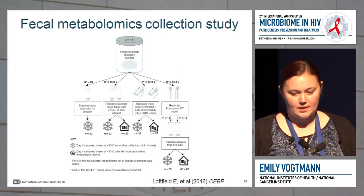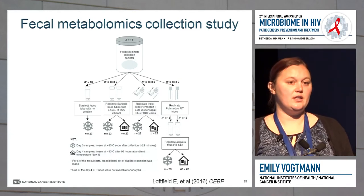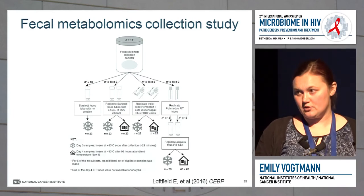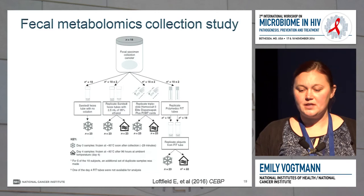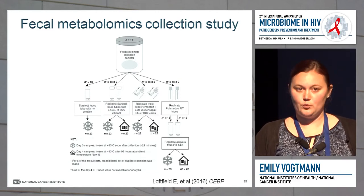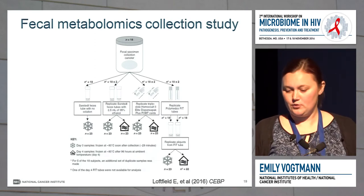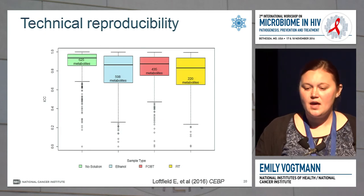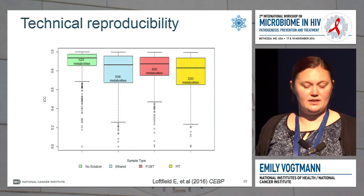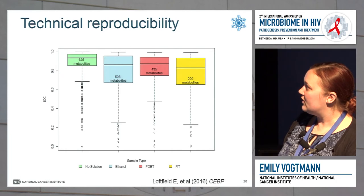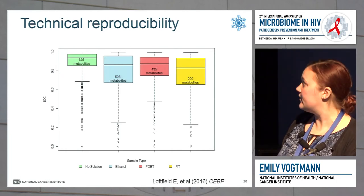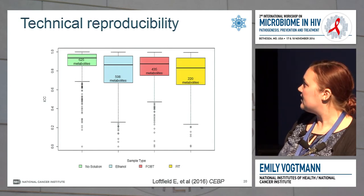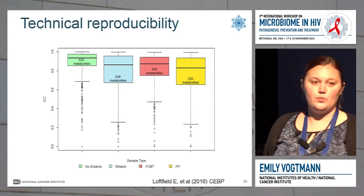We also wanted to look at fecal metabolomics within these same collection methods to see whether you could actually conduct metabolomic analyses. Of the collection methods mentioned earlier, RNA later was unable to be used for metabolomics, so it was excluded. We looked at the immediately frozen fecal samples, samples left for four days at room temperature, and 95% ethanol, FOBT cards, and FIT tubes. The immediately frozen fecal samples with no solution had the highest number of metabolites — 625. Ethanol had the second highest with 508. FOBT cards had a slightly lower number, and FIT tubes had the lowest number of metabolites.